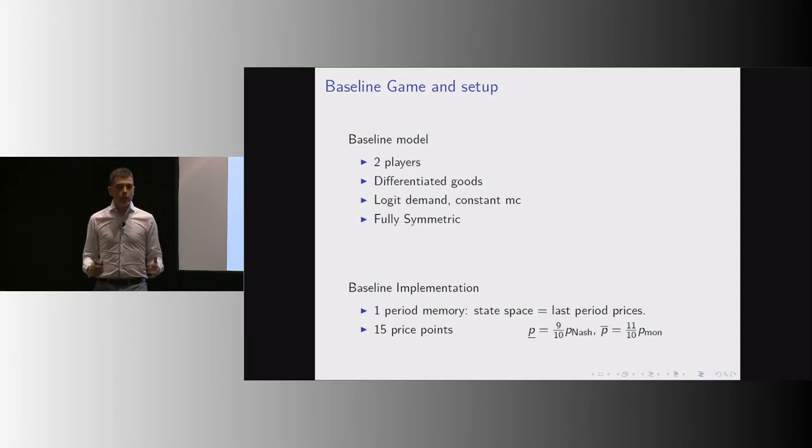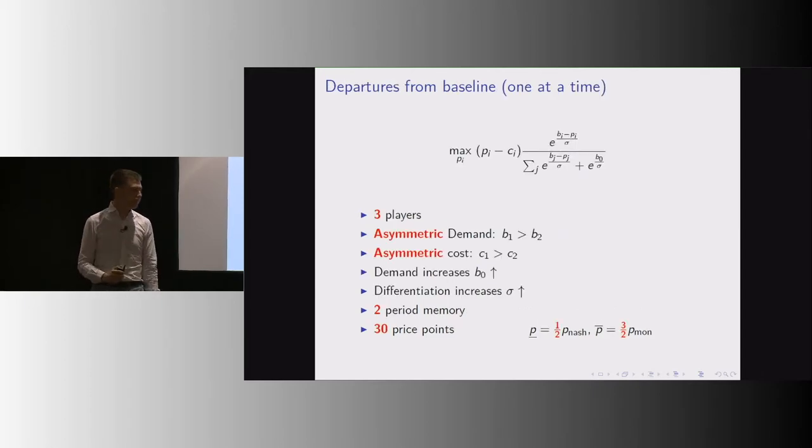In the baseline implementation, we're going to allow these agents to have a limited memory. What this means here is a one-period memory, so they're going to remember only what last-period prices were. Then we're going to let them choose prices on a grid of 15 price points.